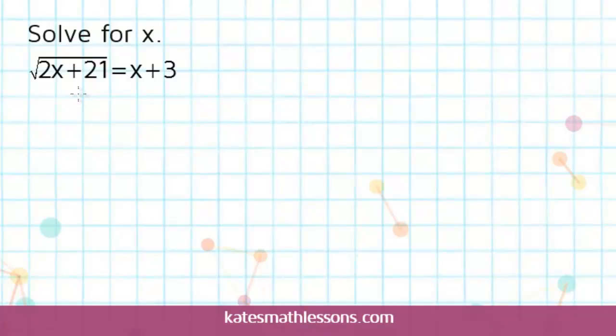When you're solving an equation that has a radical sign in it, the first step you want to do is make sure your radical is by itself on one side of the equation.